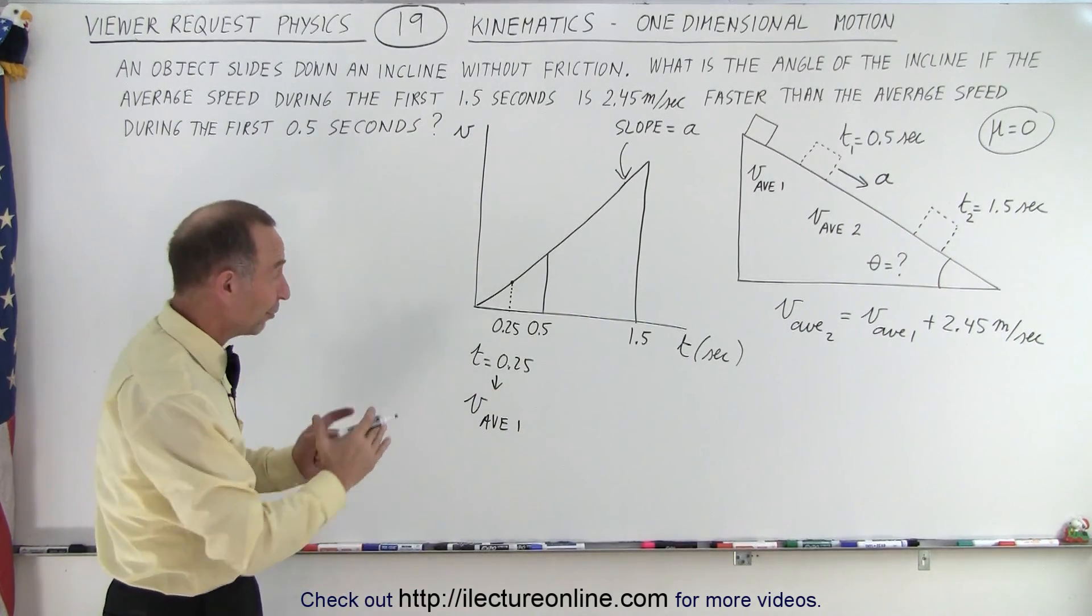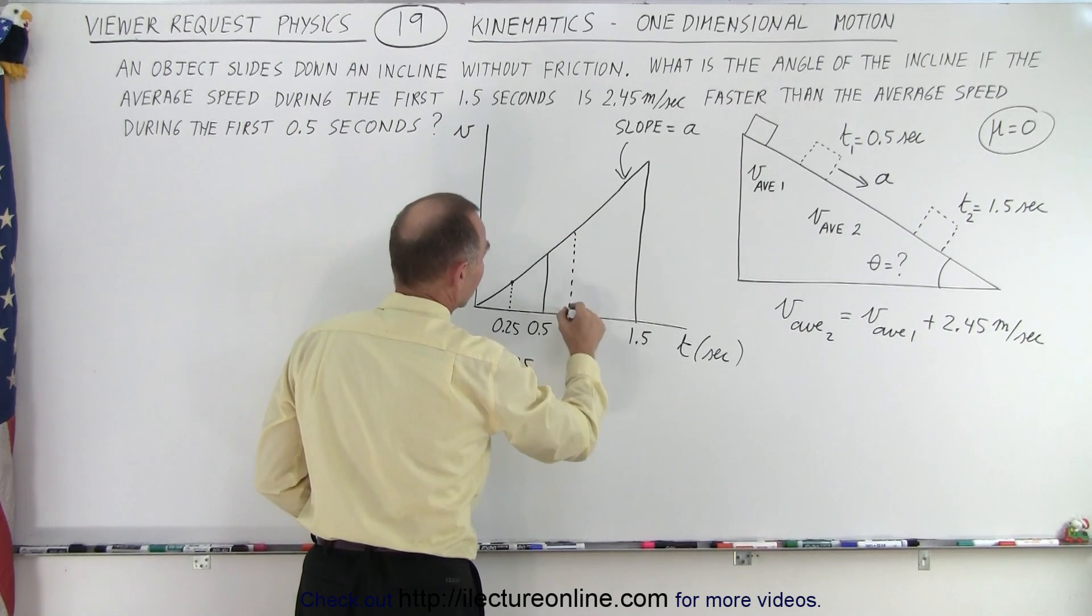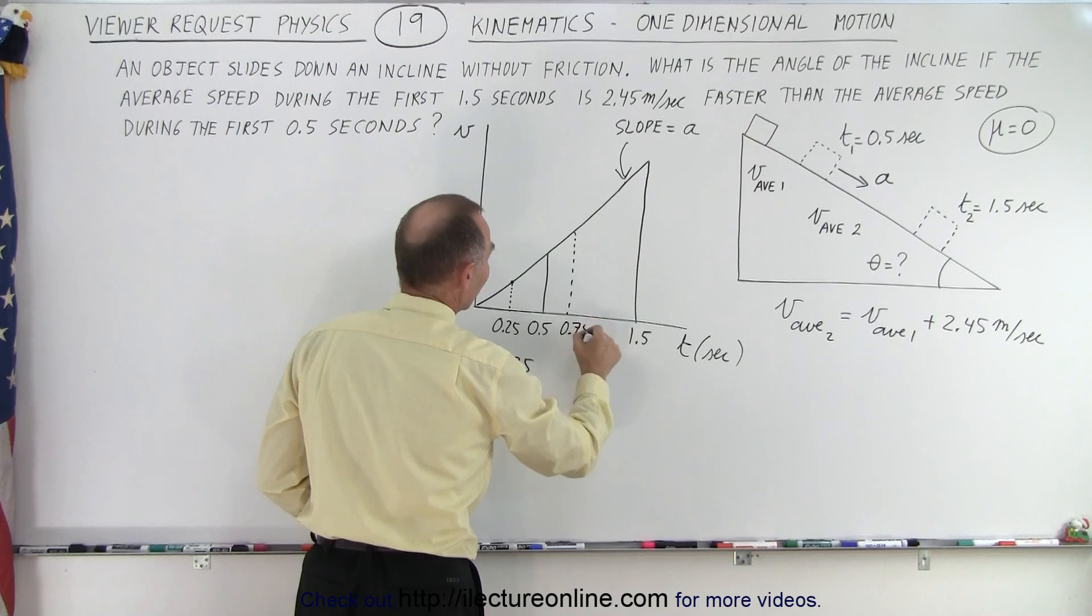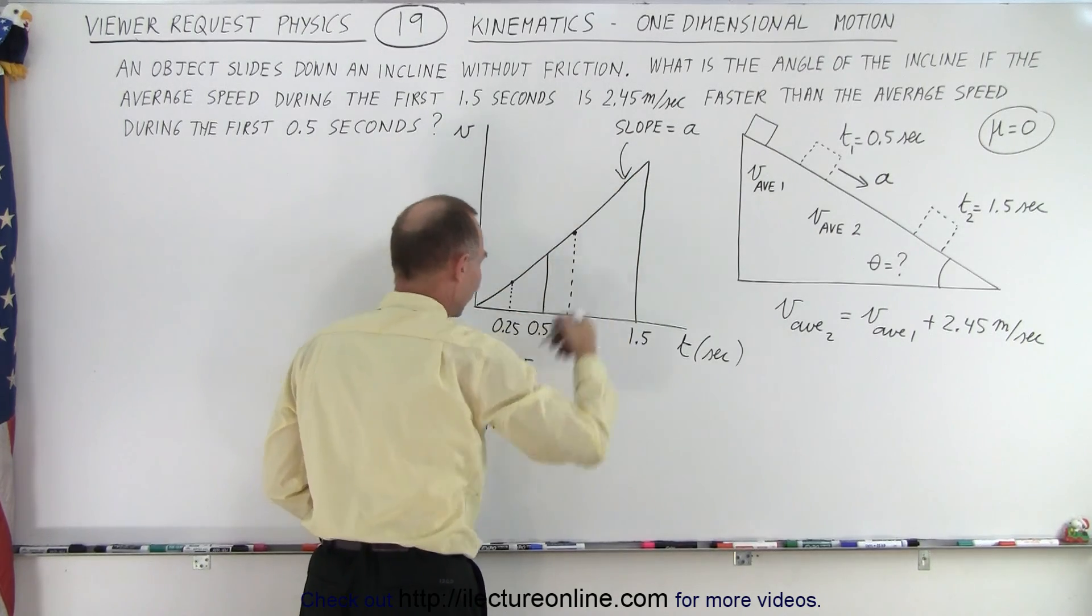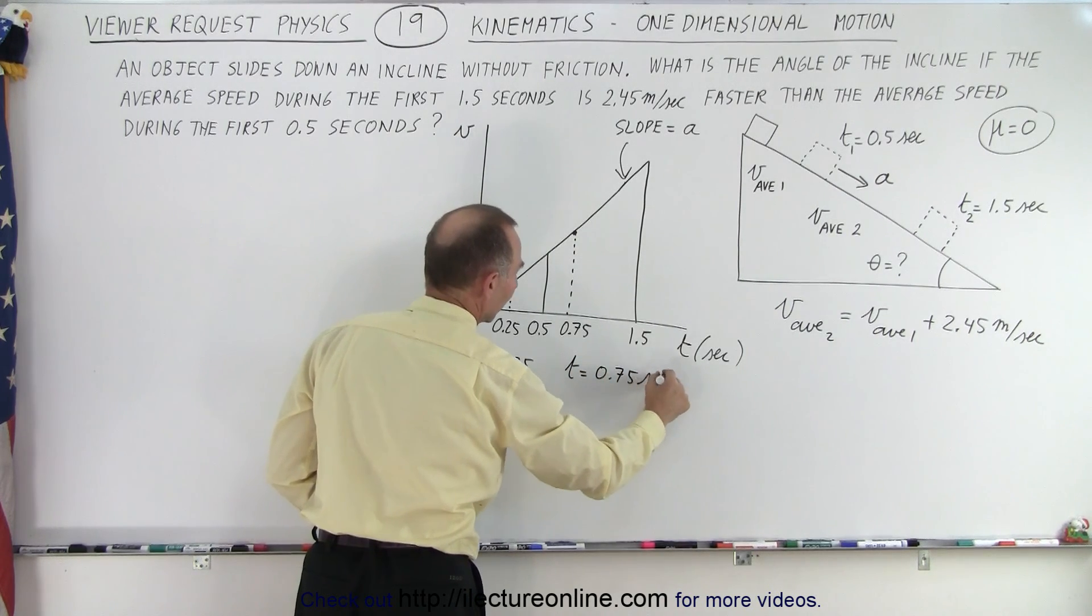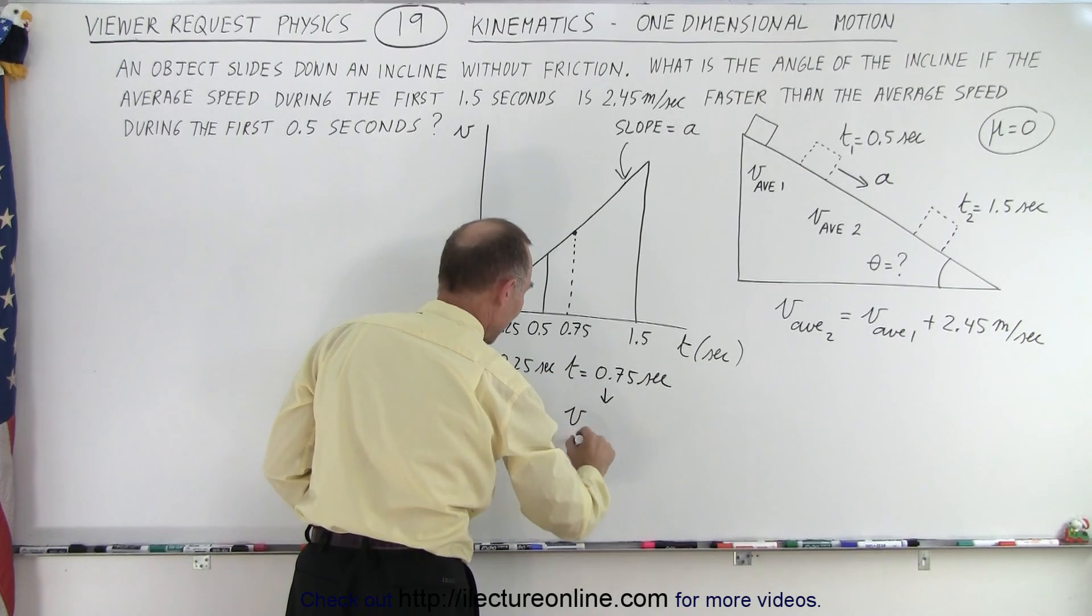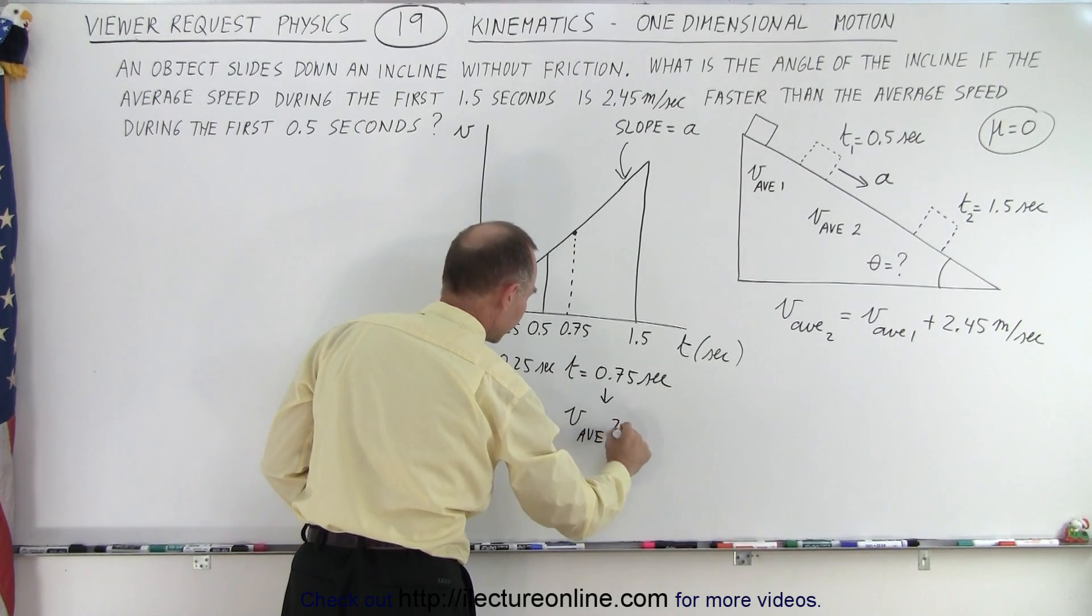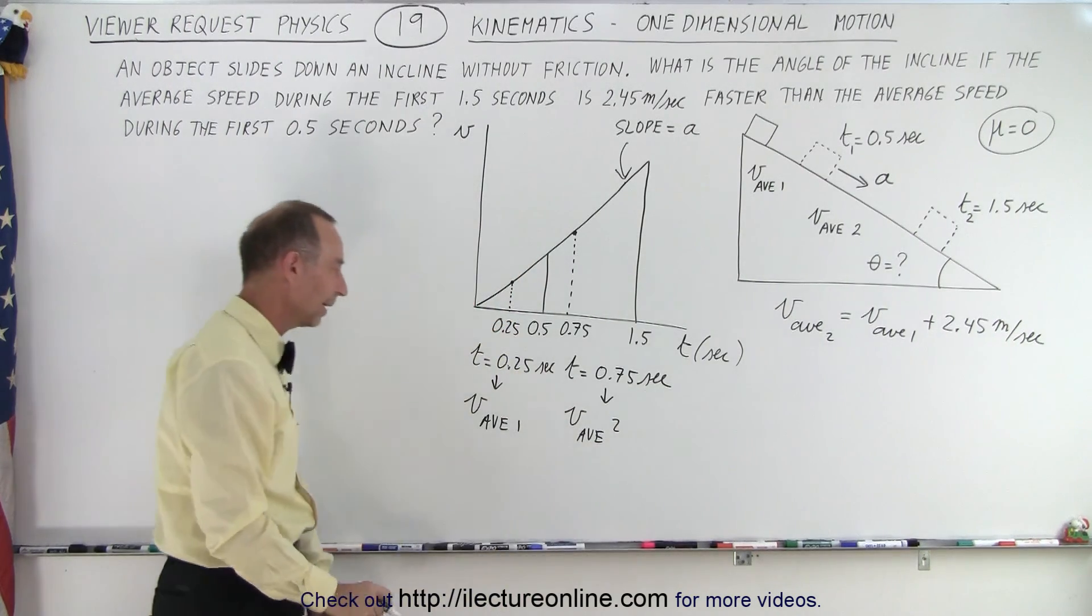And we could do the same thing for the first 1.5 seconds. If we go to this point right here, where the time is 0.75 seconds, this would be the average velocity for the first 1.5 seconds. So when time is equal to 0.75 seconds, then we could say that V average 2 is equal to, that gives us V average 2.